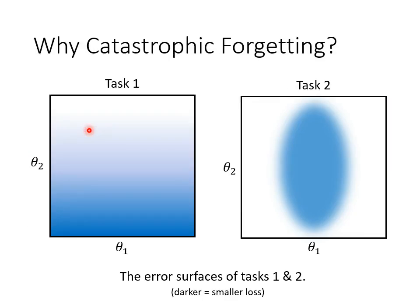Let's first think about the problem: why will catastrophic forgetting happen? We assume there are Task 1 and Task 2, and our model has only two parameters, θ1 and θ2. The two pictures on this slide represent the loss functions of Task 1 and Task 2 — different values of θ1 and θ2 give different losses. We use color to denote the amount of loss.